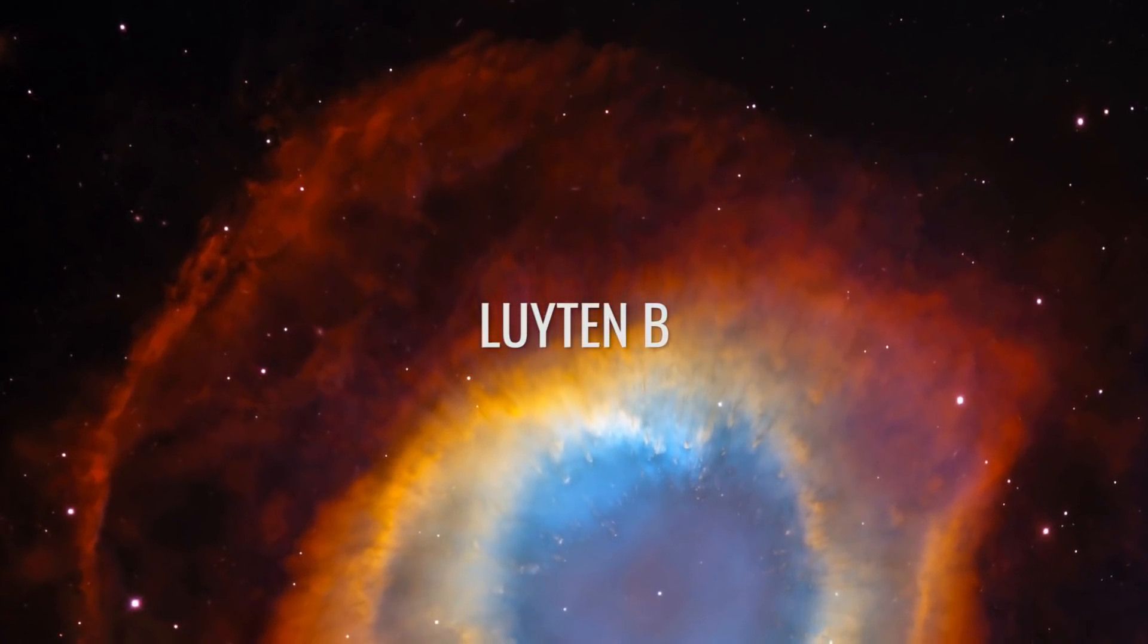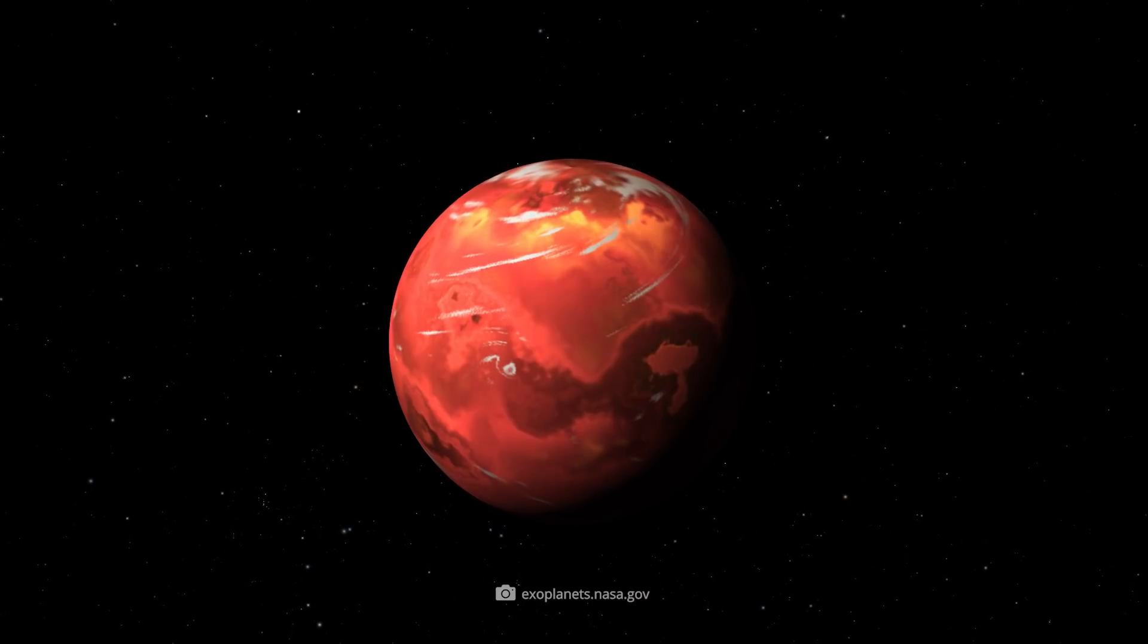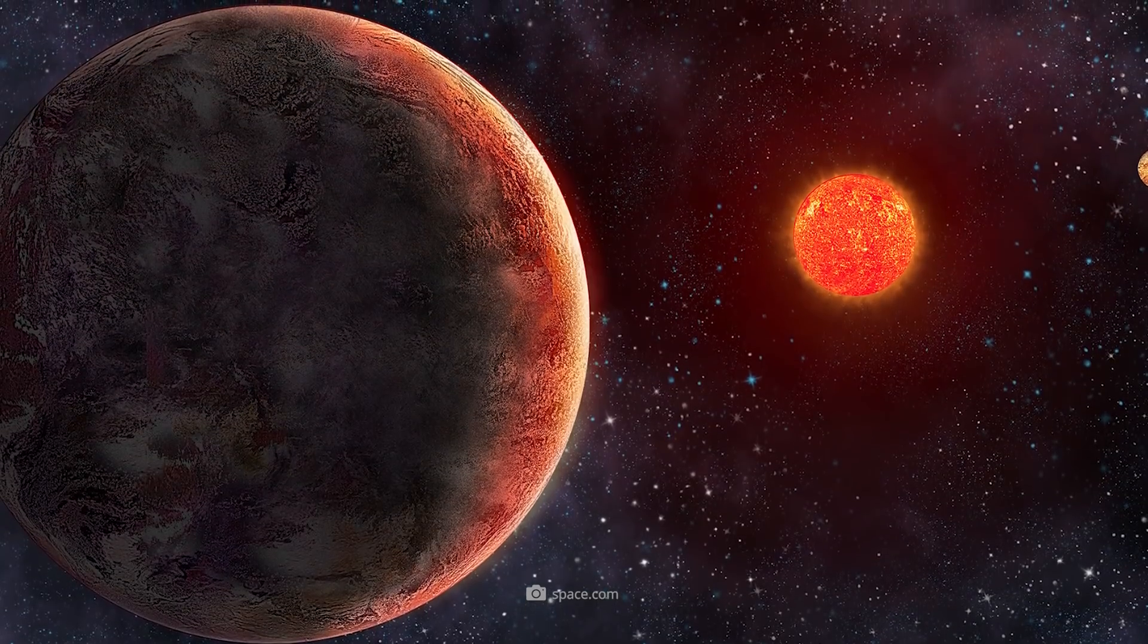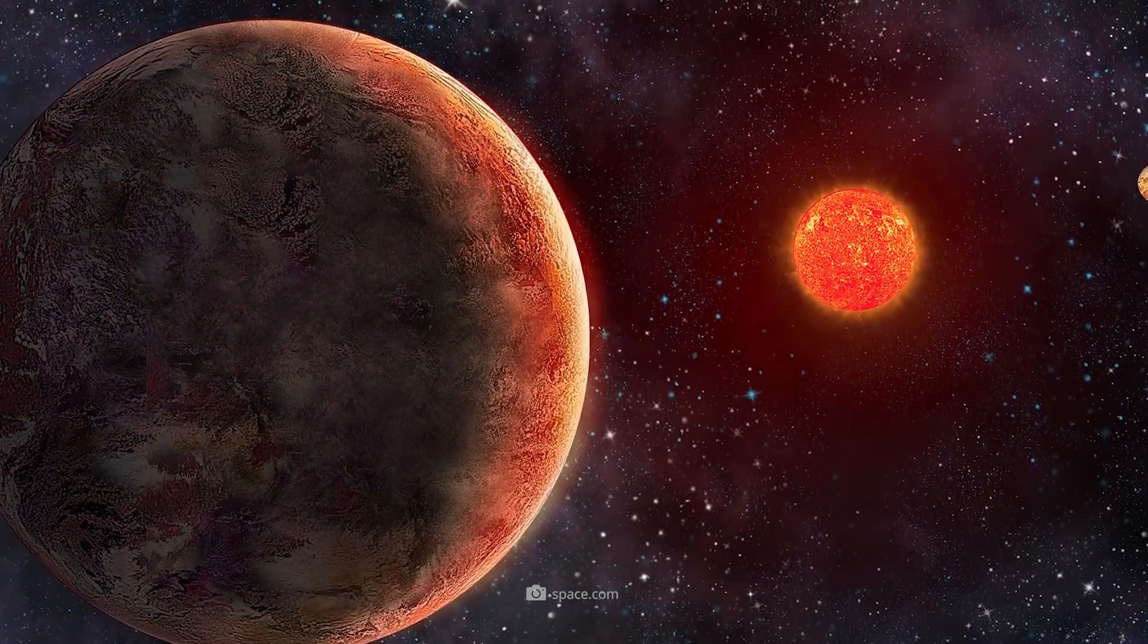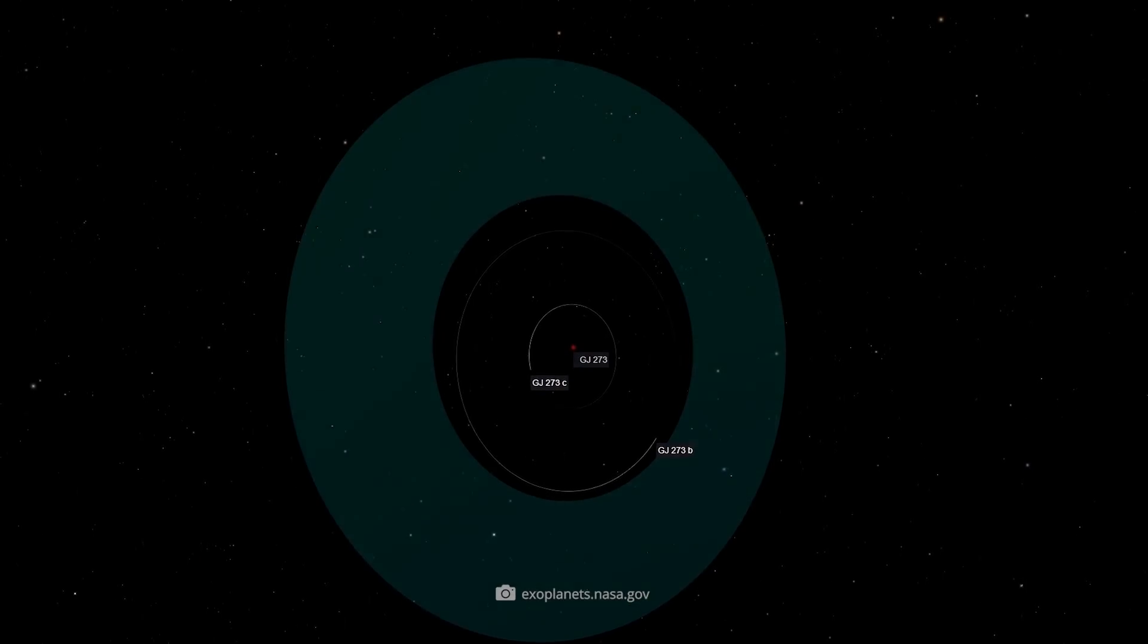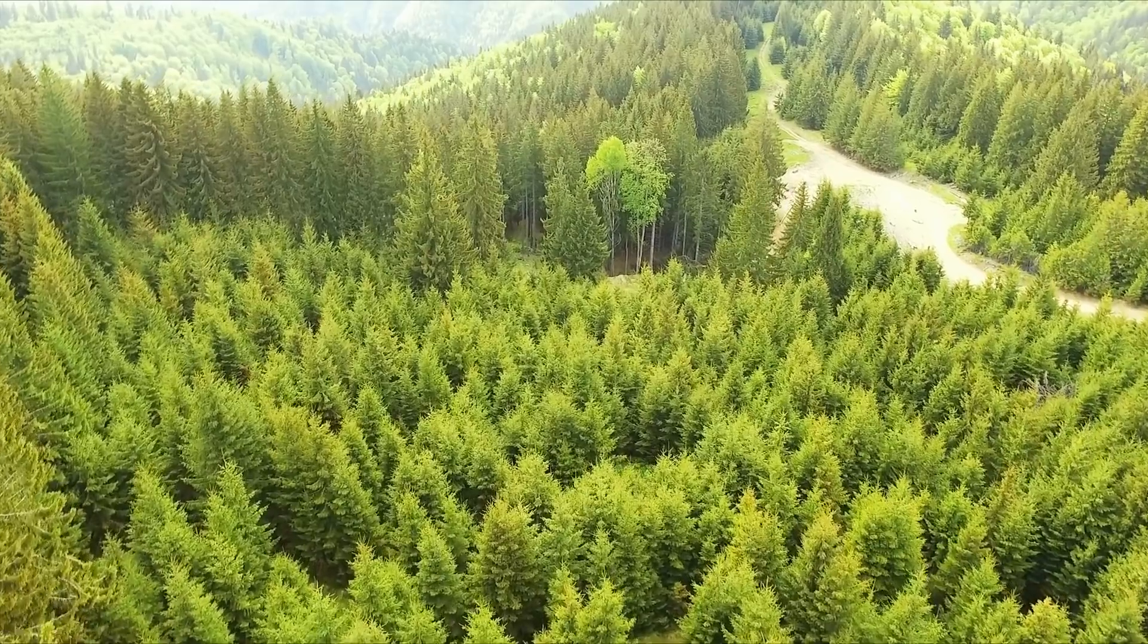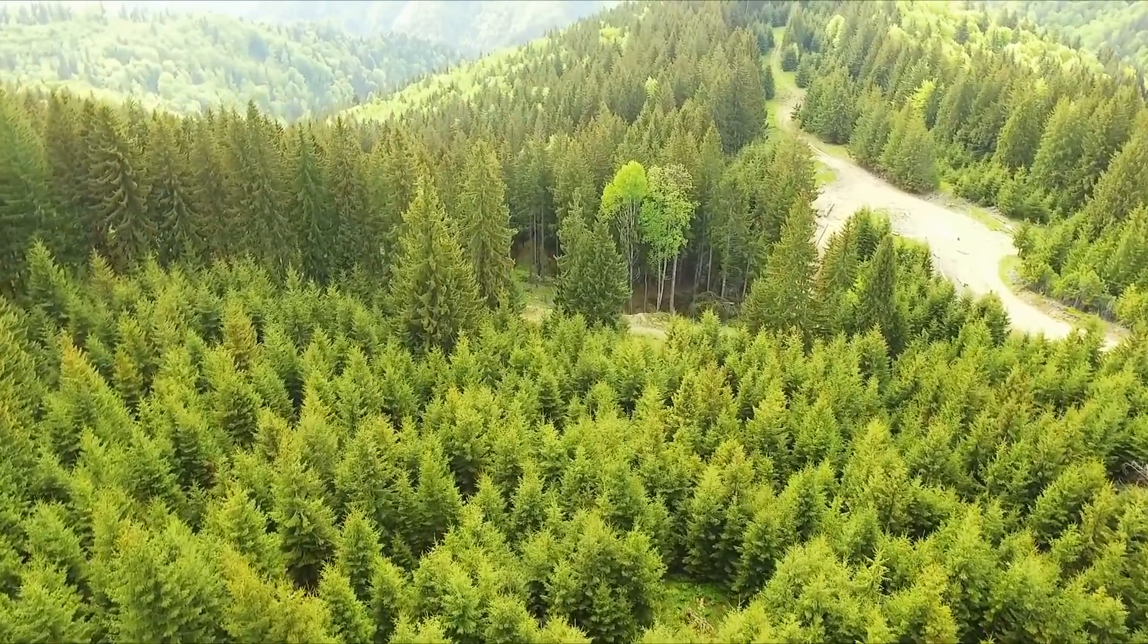Luyten b. Luyten b is sometimes called Gliese 273 b in the catalogs. This Earth-like planet is most likely a rocky planet. It orbits the red dwarf Luyten star within the habitable zone. This means it's close enough to its star to get enough light and heat, but far enough away to allow vegetation and life.